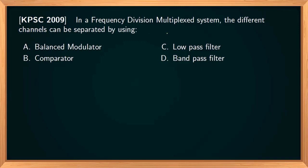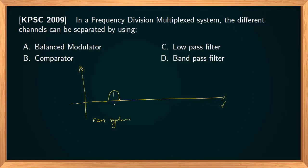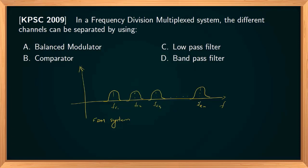In a frequency division multiplexing system, the different channels can be separated using band pass filters. In FDM, the spectrum shows signals from each user centered at different carrier frequencies FC1, FC2, ... FCN, each occupying a different bandwidth. These individual signals can be recovered using band pass filters centered at FC1, FC2, and so on up to FCN.